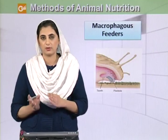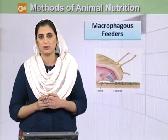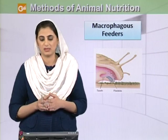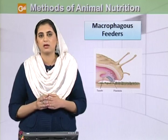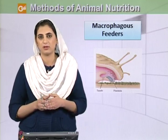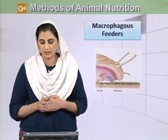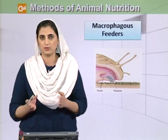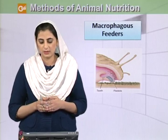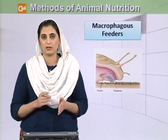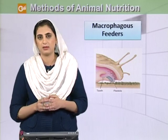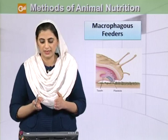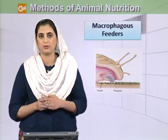Then we have macrophagous feeders — organisms which take in food in the form of large food chunks. For example, garden snails take in food as a large food chunk, such as a leaf. The radula is a tongue-like structure which helps in taking in the large food chunk. When they take in a leaf, the radula moves in and out, the lip holds the food inside, and teeth then churn the food into smaller pieces.